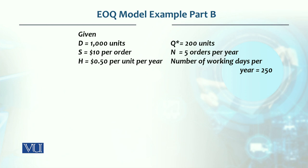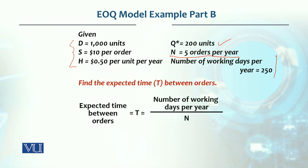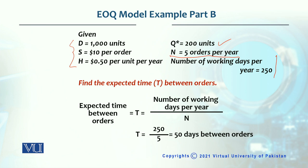Now, what will be the time between orders? We have the number of orders, which is 5 orders per year. There are 250 working days, so how many days apart do we need to place each order repeatedly? It is the number of working days per year, which is 250 divided by N. In this case N is 5, so we place 5 orders in 250 days, meaning 50 days between each order.